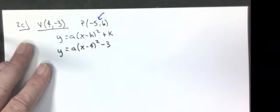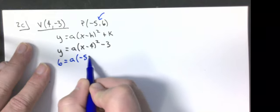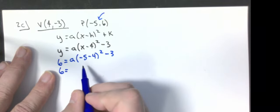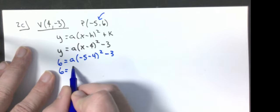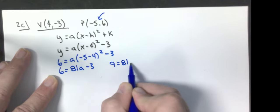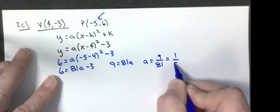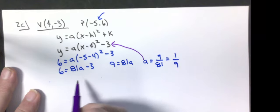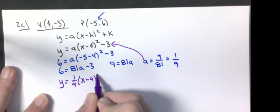Now I substitute the point (-5, 6) into the equation: 6 equals a times (-5 minus 4) squared minus 3. That gives 6 equals 81a minus 3. Adding 3 to both sides and dividing by 81, I get a equals 9 over 81, which is 1/9. So the equation is y equals one-ninth times x minus 4 squared, minus 3.